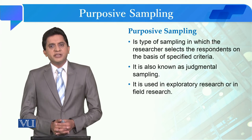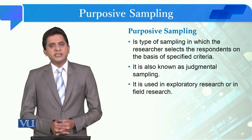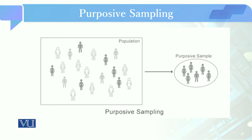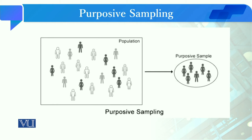So in that situation, we can use this sampling type. If we look at this illustration, the population is a community population, and the sample selected from it has predefined characteristics.